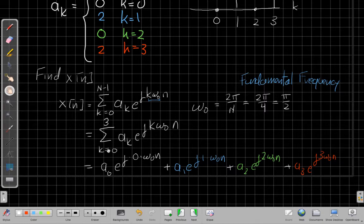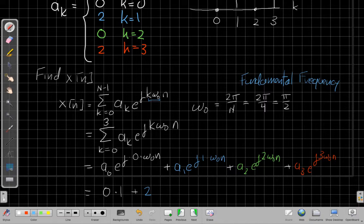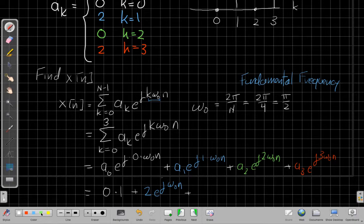Now I can come up here and take each term and plug in from above. When I've got 0 here, and e to the 0, this 0 in the exponent makes the whole exponent 0. e to the 0 is 1, plus for the k equals 1 term, I have a1 which is equal to 2, and then I have e to the j omega 0 n.